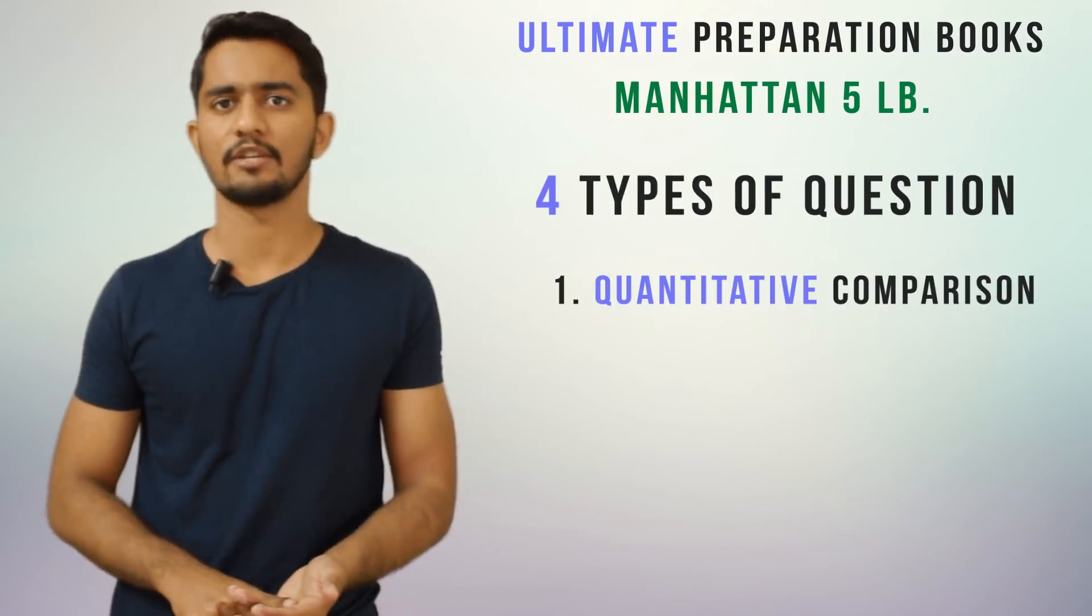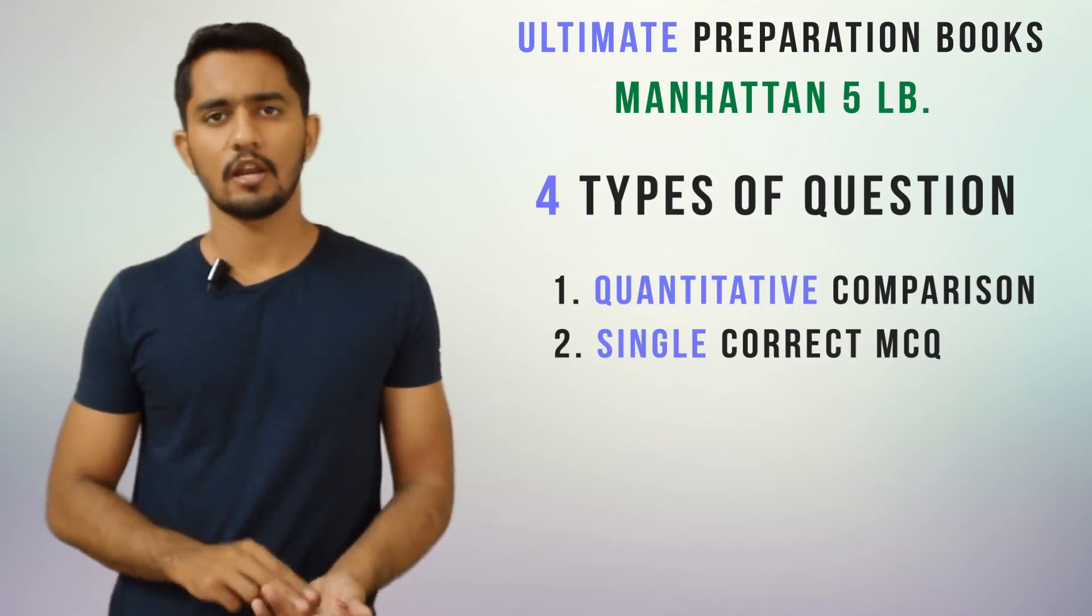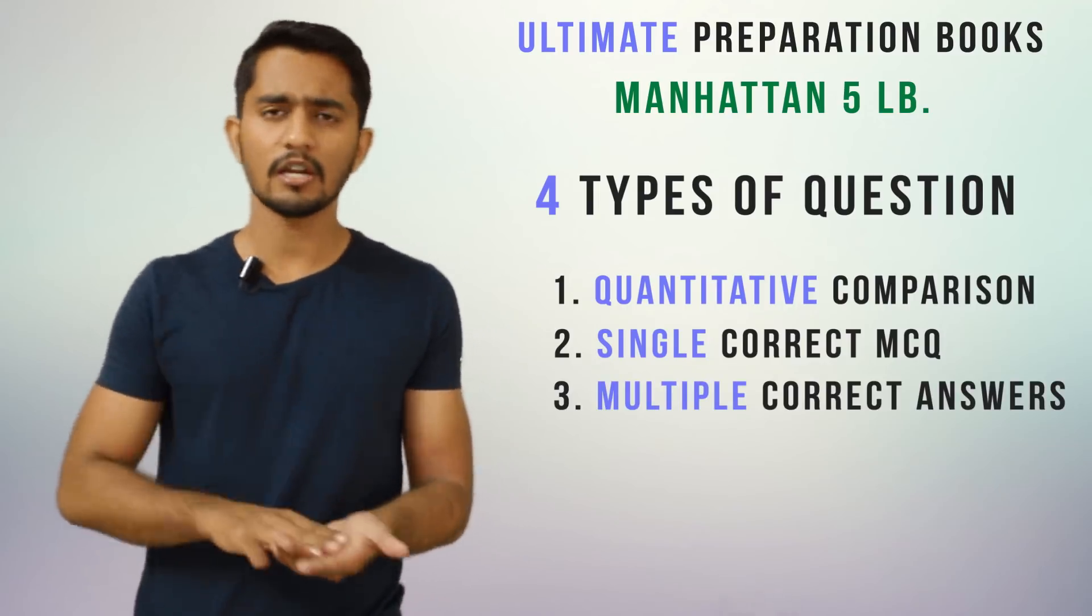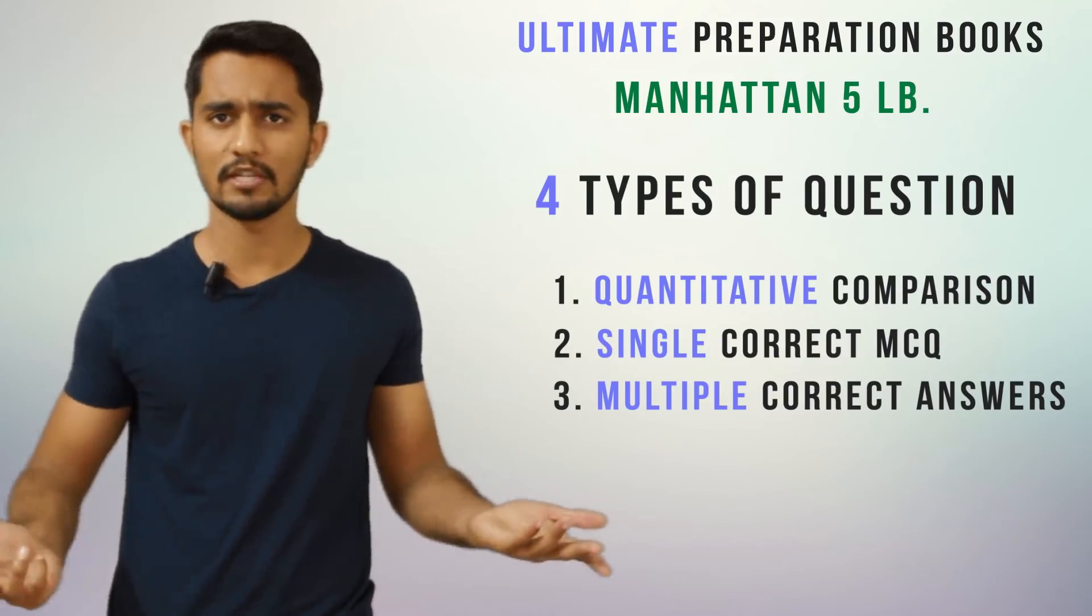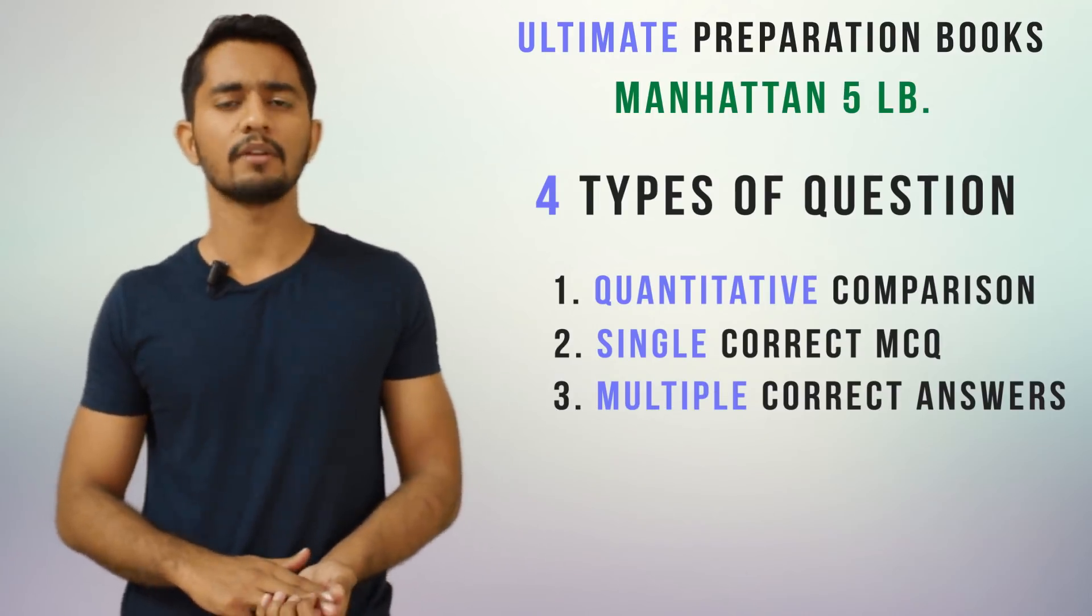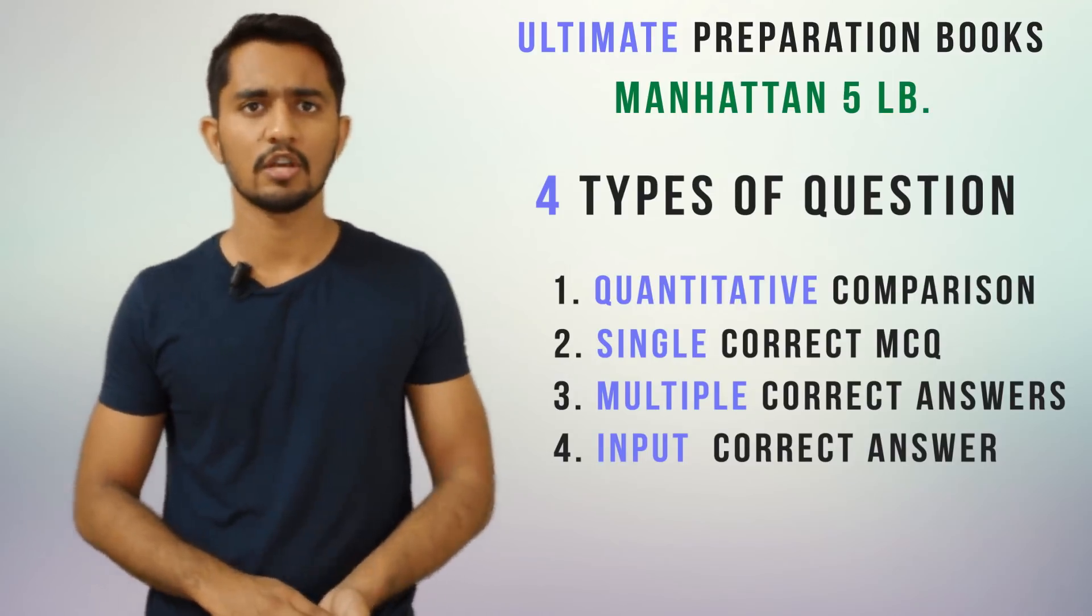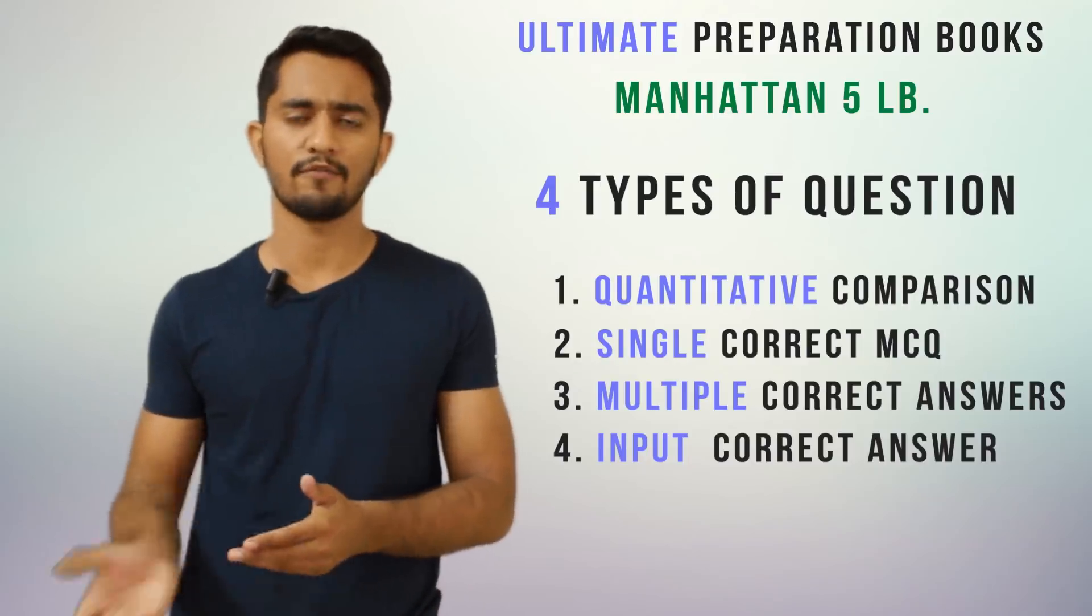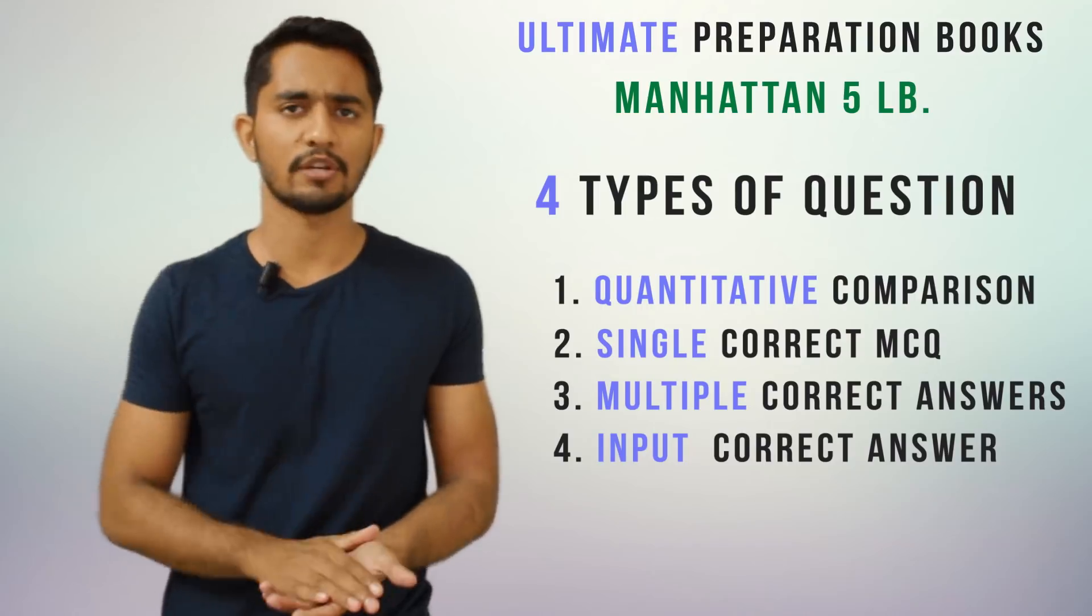There are four types of questions you will encounter in your GRE. Number one is the quantitative comparisons questions. Number two, the regular MCQ questions. Number three, multiple answer correct questions. In this type of question you will have five options and from those five maybe two are right, one is right, or maybe all five are right. You need to be careful while attempting this type. Number four is inputting the answer. For this you would not have options, but whatever your answer is you would have to input it in the box given to you.